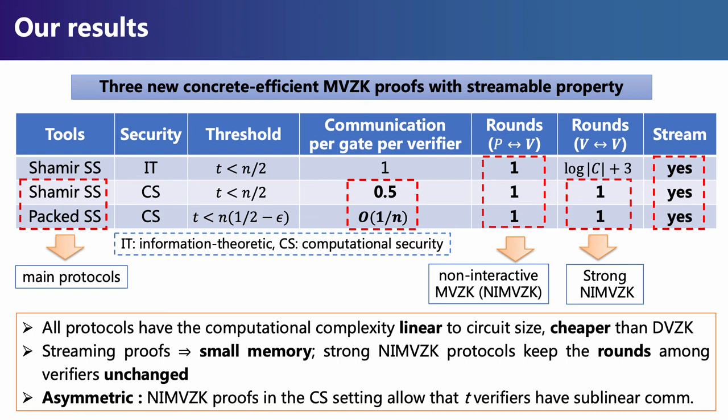For computational complexity, our protocols are linear to the circuit size and cheaper than DVZK. Our strong NIMZK protocols keep the rounds among verifiers unchanged. Our strong NIMZK proofs also have an interesting asymmetric characteristic: T verifiers have sublinear communication and can be lower-resource mobile devices.